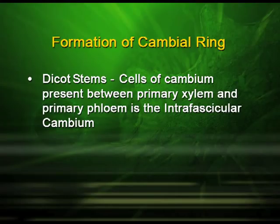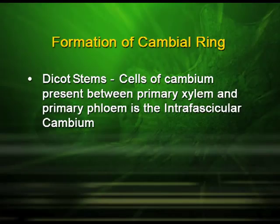The formation of cambial ring: in dicot stems we find the intrafascicular cambium, which are actually the cells of cambium present between primary xylem and primary phloem. Medullary cells adjoining these intrafascicular cambium become meristematic and form the interfascicular cambium, which is the continuous ring of cambia.